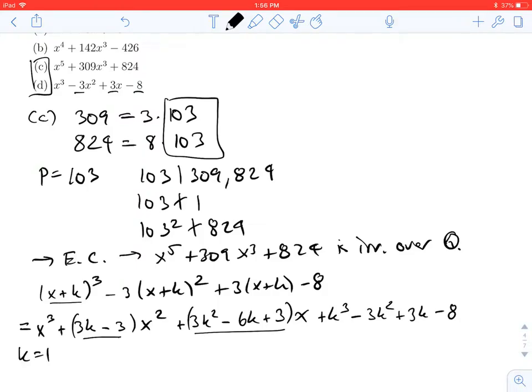If k equals 1, then I get x^3, the middle terms disappear, and for the constant: 1^3 - 3(1)^2 + 3(1) - 8 = 1 - 3 + 3 - 8 = -7. So we get x^3 - 7.